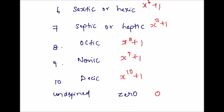If the degree is undefined, you can say that it is a zero polynomial. The example would obviously be 0.